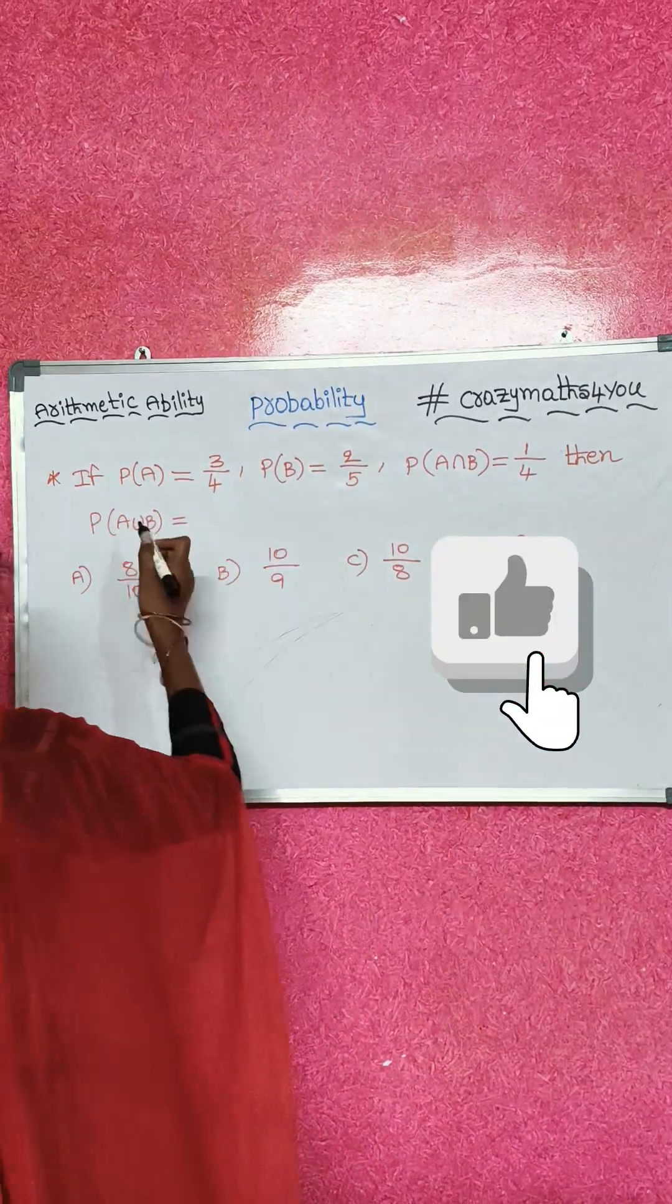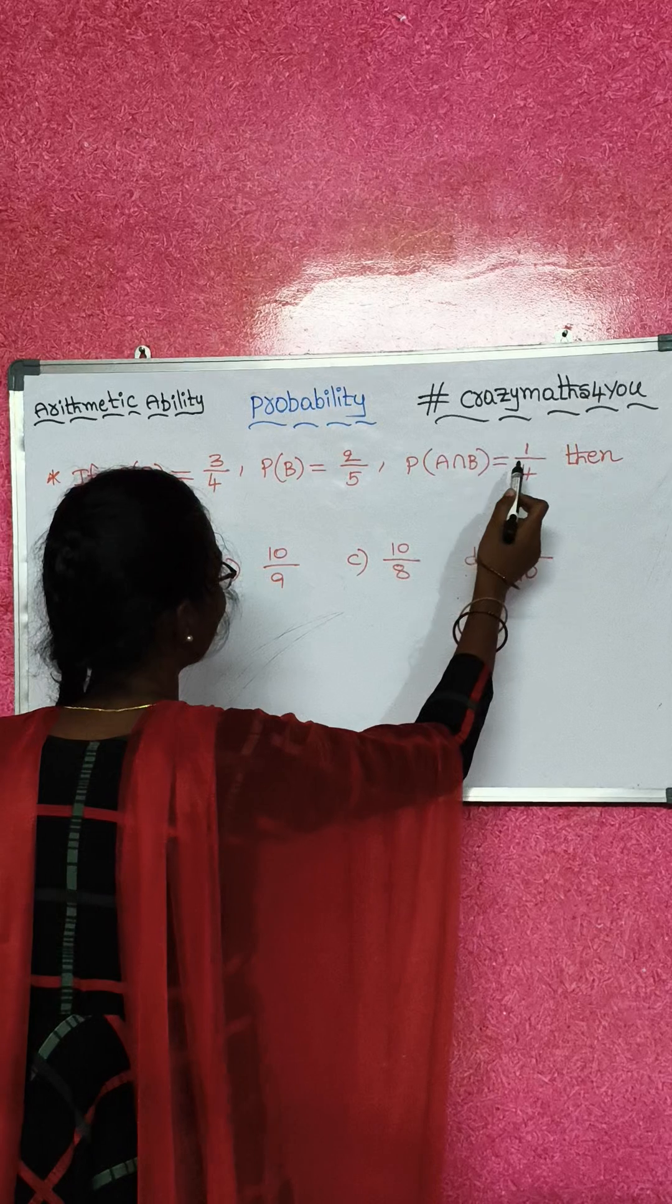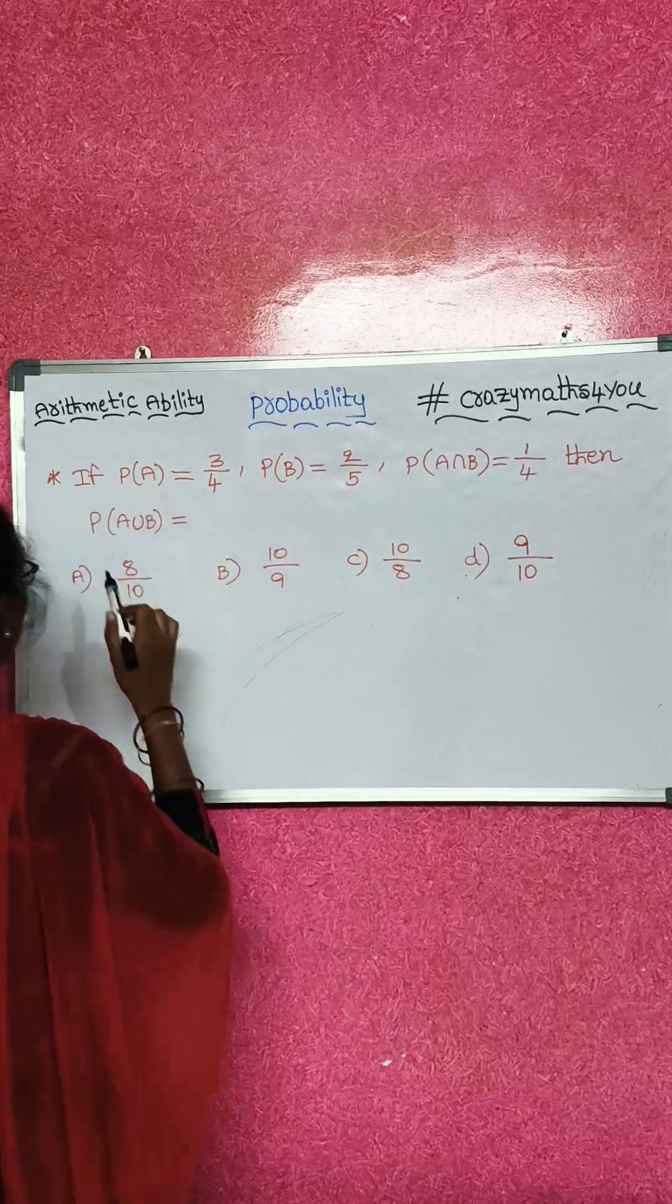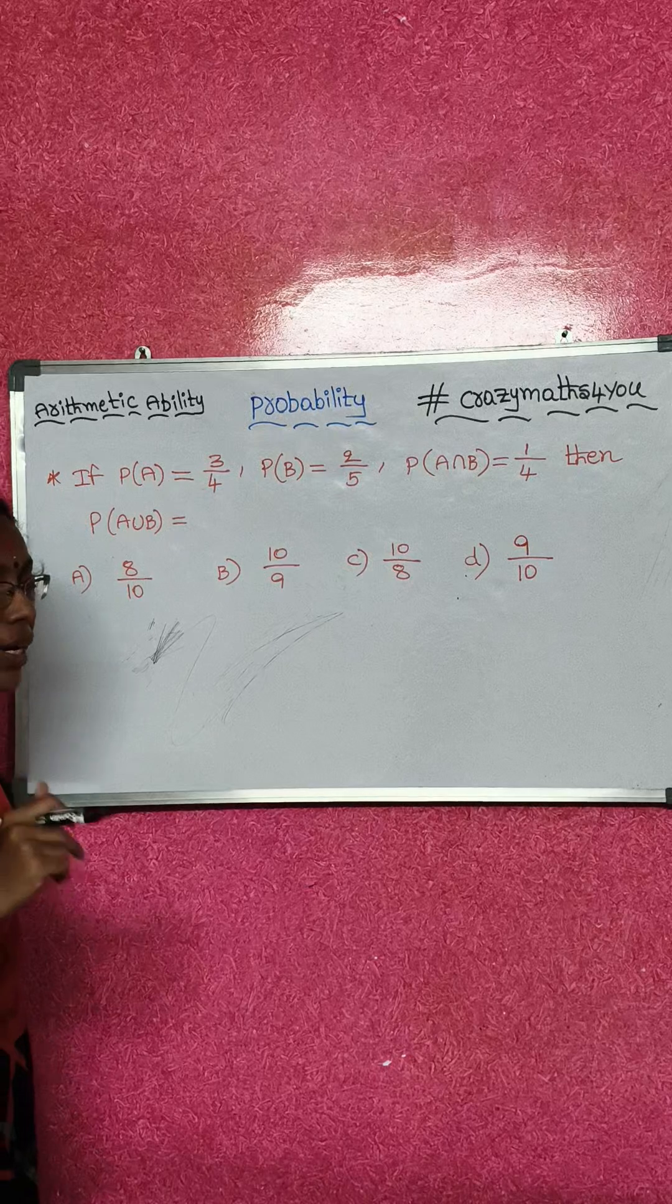Here is my question. If P(A) equals 3/4, P(B) equals 2/5, P(A∩B) equals 1/4, then find P(A∪B). I want to find out P(A∪B).